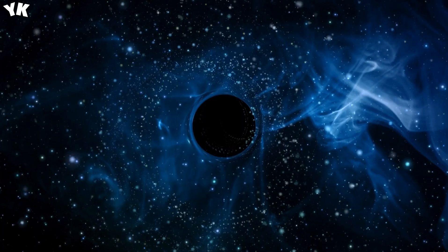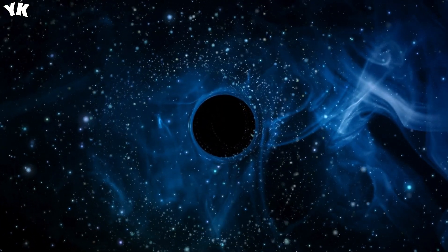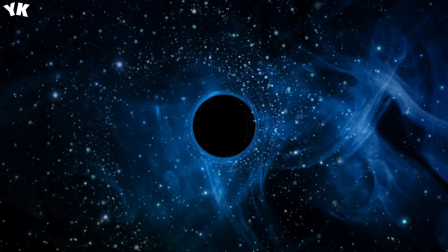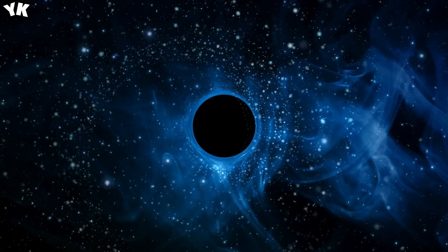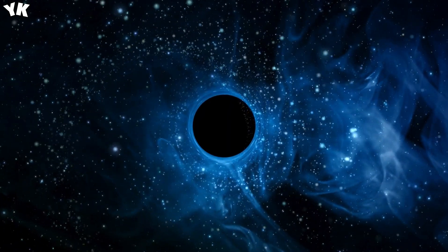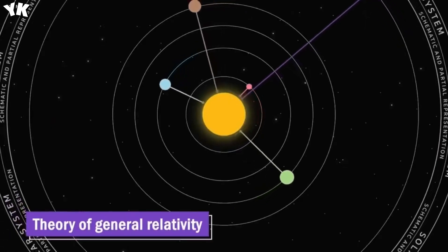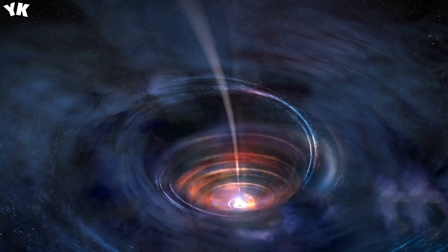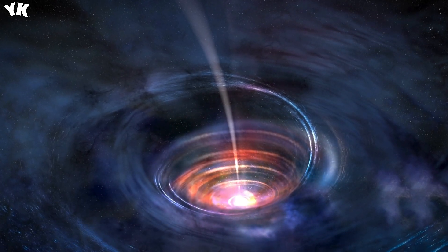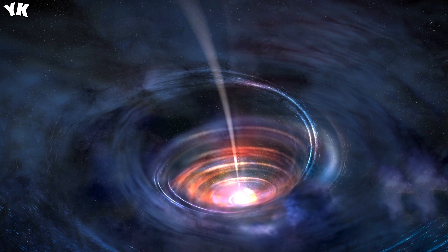The gravitational influence of black holes extends far beyond their immediate vicinity, shaping the dynamics of galactic evolution and influencing the fate of surrounding matter. Objects that venture too close to a black hole face a fate sealed by its inexorable pull. They are drawn inexorably toward the event horizon, the point of no return, where they are subjected to intense tidal forces and ultimately consumed by the singularity at the black hole's core.